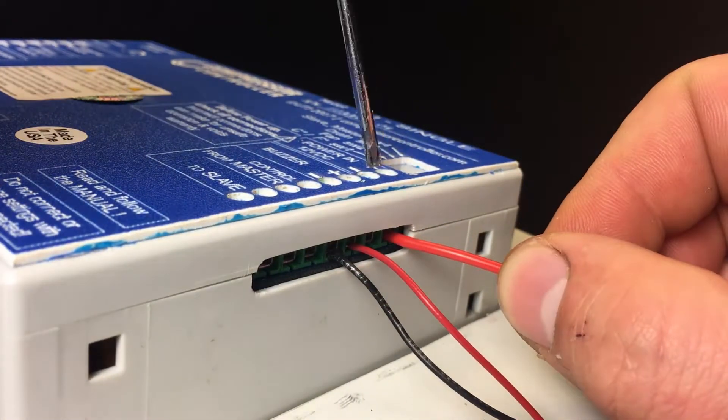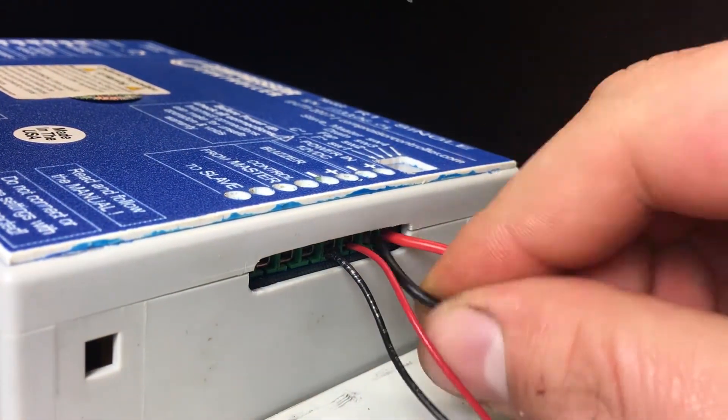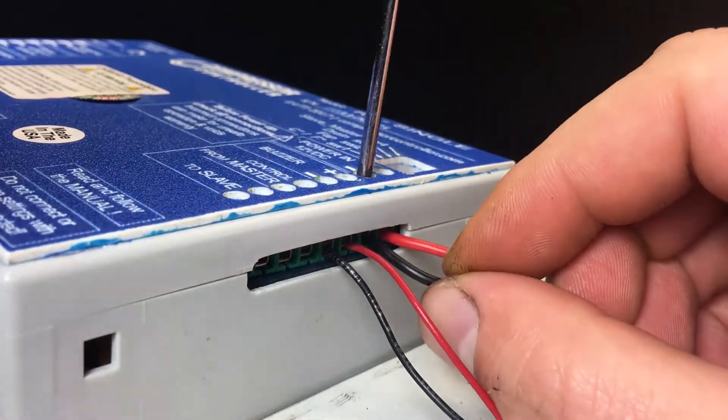We can now complete the DC side of the wiring by connecting the 12 volt power supply to the compressor controller power in connections.